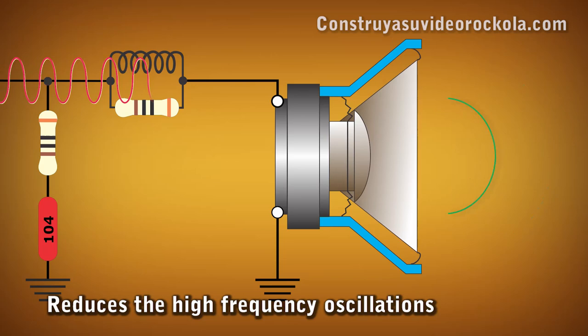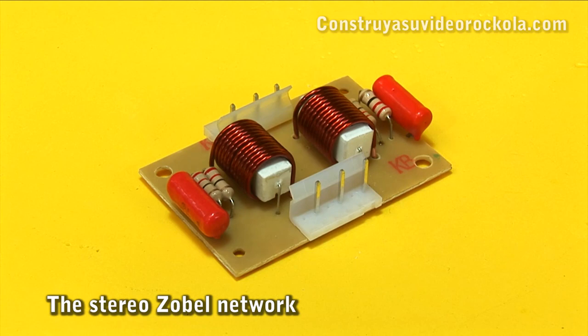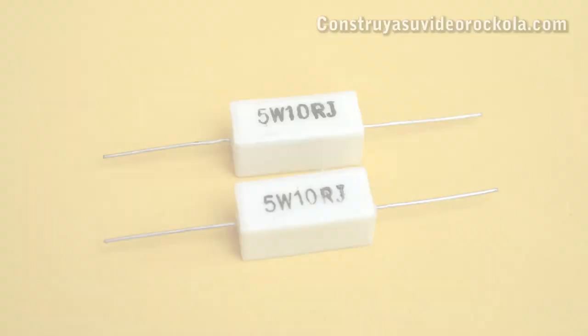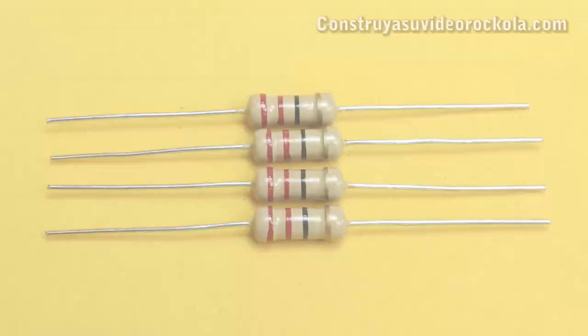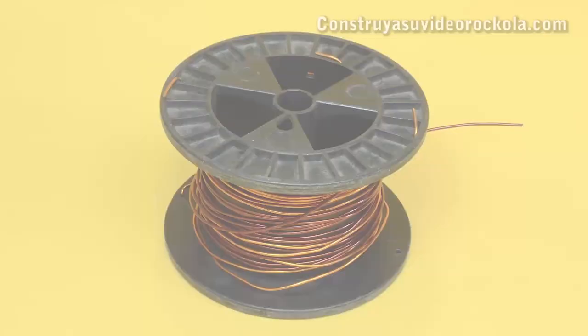We will see how to build a Zobel network serving many amplifiers. Materials: a printed circuit board, which can be made in fiberglass or bakelite — you can download the PDF file from the video description. 2 resistors of 10 ohms at 5 watts. 4 resistors of 22 ohms at 1 watt. 2 capacitors of 0.1 microfarad at 250 volts. And insulated copper wire, 16 AWG gauge.